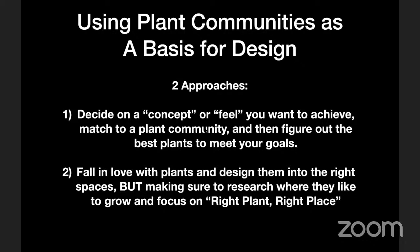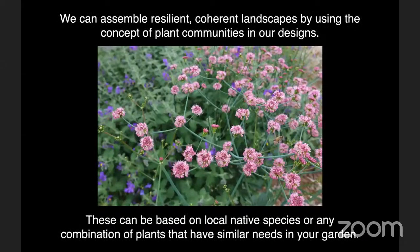The other approach is to fall in love with plants and then design them into the right spaces, really making sure you research where they like to grow and focusing on putting the right plant in the right place. Basically, if you're doing that, you're creating your own plant community — thinking through what plant communities have. If you want some shelter, find the right tree for your space. Think about a shrub layer, a ground cover layer, and let those natural plant communities inspire you.